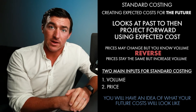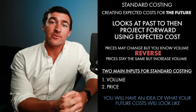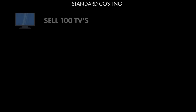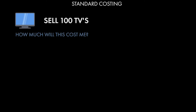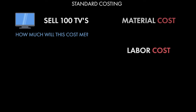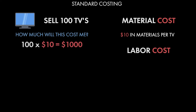Then you can create budgets around that. For example, let's say that I sell TVs. Next year, I plan on selling 100 TVs. How much is that going to cost me? To figure that out, I need a few pieces of information — how much it's going to cost me for labor and how much it's going to cost me for materials. Let's say I know it's going to cost me $10 in materials per TV I make. That's pretty straightforward: 100 times 10 equals $1,000 in materials for next year. So in order to make 100 TVs, it's going to cost me $1,000 in materials.